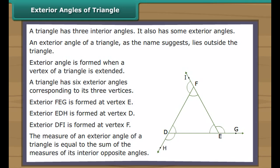The measure of an exterior angle of a triangle is equal to the sum of the measures of its interior opposite angles. In the figure, angle FEG is equal to the sum of angles FDE and DFE.